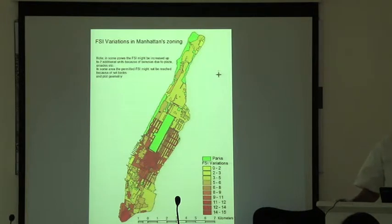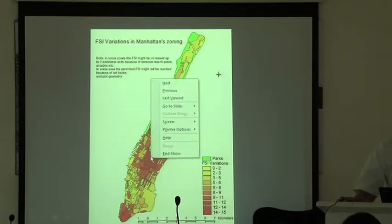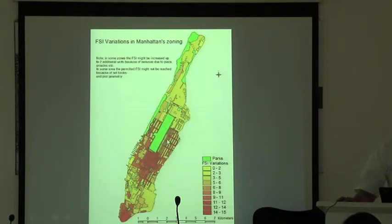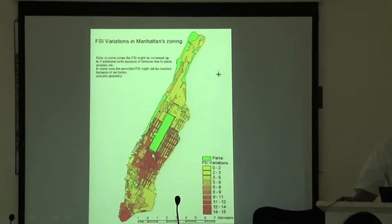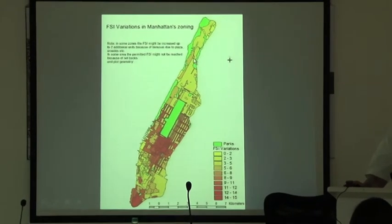This is a plan of Manhattan which shows FSIs across the city. This is Central Park, and we will be talking in detail about Community District 8 — the densest residential district in Manhattan — and Community District 5, CD5, which is Midtown, the Central Business District. The high values of FSI are in Midtown, and the FSI fades away; in the northern parts of Manhattan it is 3 or less.